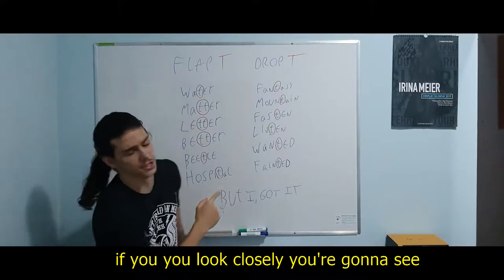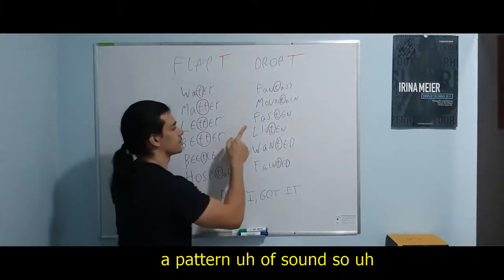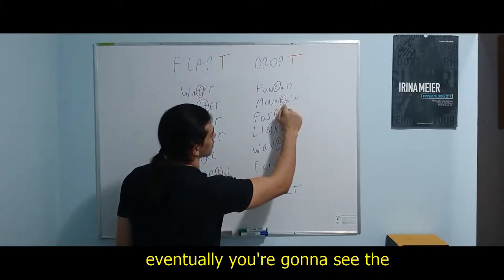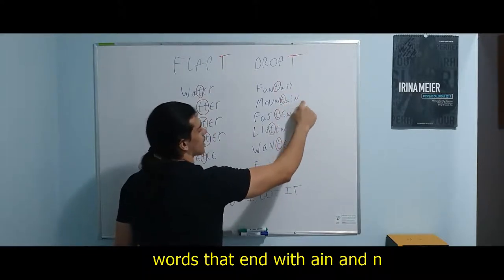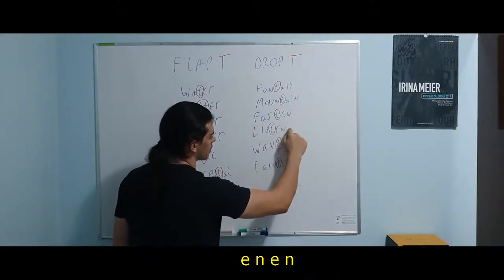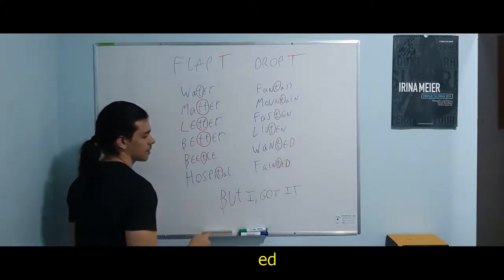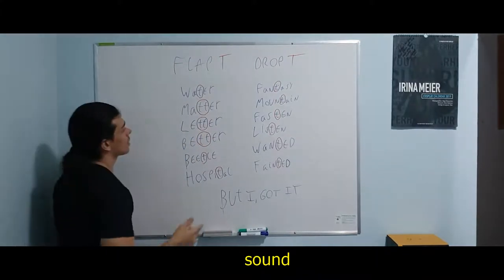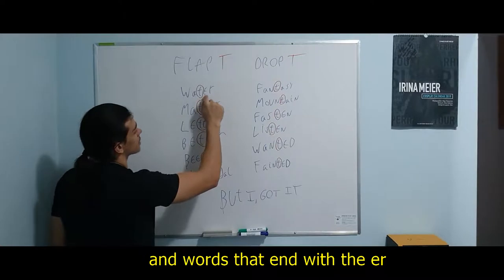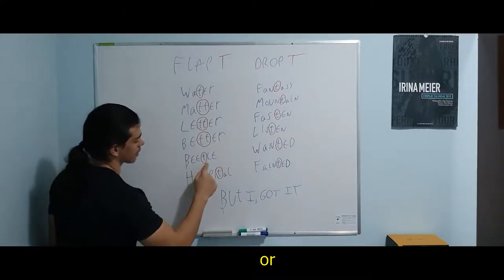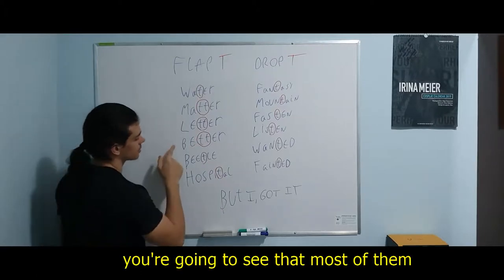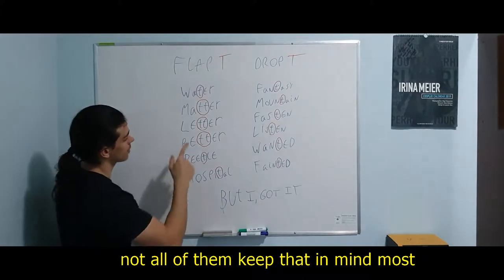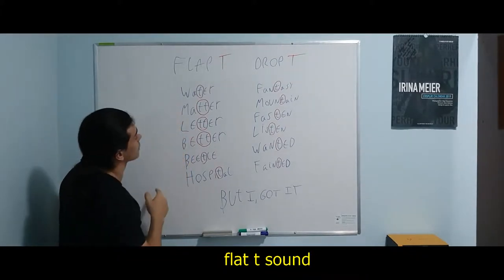If you look closely, you're going to see a pattern of sound. Usually, eventually, you're going to see that words ending with -AN, -EN, -ED are going to have a drop T sound. And words that end with -ER or -TLE — most of them, not all of them, keep that in mind — most of them are going to have the flap T sound.